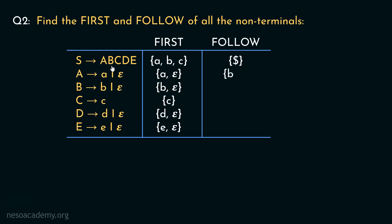Now if we substitute B using Epsilon, uppercase A is going to be followed by uppercase C. Therefore, we will need the first of C, that is lowercase c. So the follow of A will include another symbol, that is c. Coming to the follow of B, the non-terminal B appears here and B is followed by the non-terminal capital C. So clearly, the first of C will be the follow of B, which is lowercase c. Coming to C, C is followed by the non-terminal D. Therefore, in follow of C, we will have the first of D, that is d.